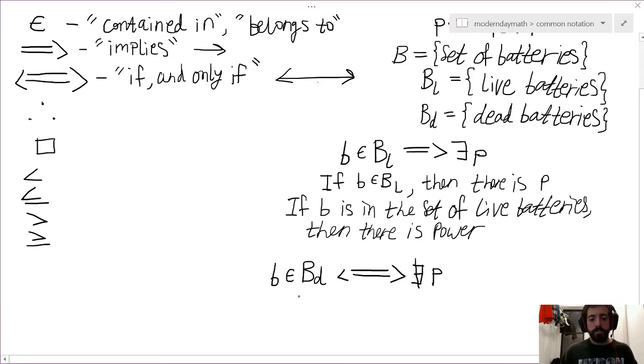But so what's going on here is we have two statements that need to hold true. We have b belongs to BD implies there does not exist power. Right, so if this battery is a member of the set of dead batteries, then there is no power. And we also need: there does not exist p implies b belongs to BD to hold true. So if there is no power, then the battery we've chosen has to be a member of the set of dead batteries. Okay, now for your practice write these out in English just to be sure that you understand it.